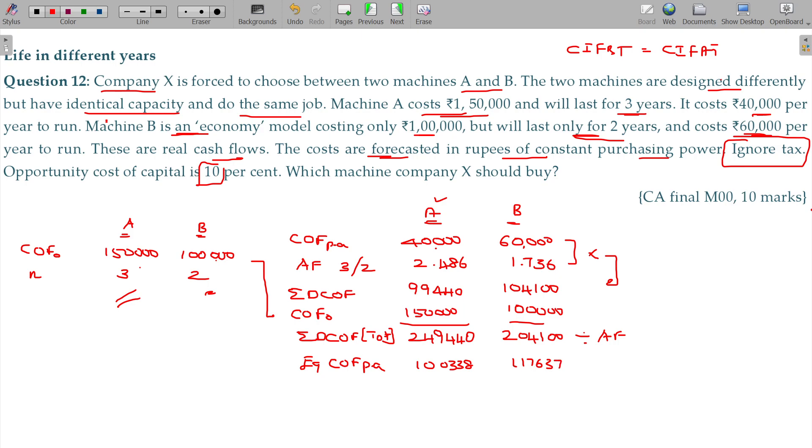As in this case we have only cost, we have to choose this one and reject the second one. Machine B is not going to be chosen and only A is going to be chosen.